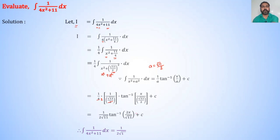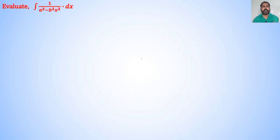Therefore ∫1/(4x²+11)dx = 1/(2√11)·tan⁻¹(2x/√11) + c. This is our final answer. The next example is: evaluate integration of 1 upon a² minus b²x² dx.